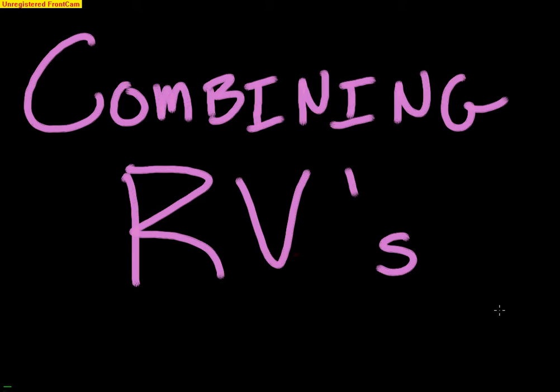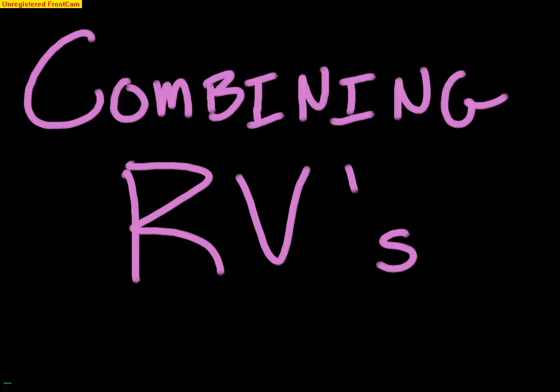This video is on combining random variables — looking at multiple random variables happening at one time. It's actually very easy, but there are just a couple of key rules that you have to understand.